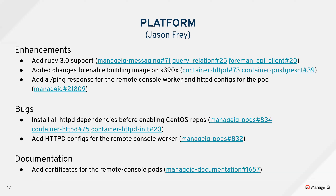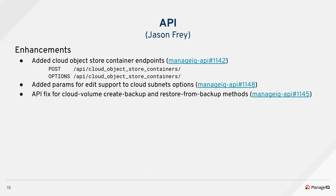Brandon also added documentation for how to add certificates for remote console pods. On the API side, Gilbert added the cloud object store container endpoints — you can do a POST to create or an OPTIONS call to get the DDF forms. He also added params-for-edit support to the cloud subnets options, so an OPTIONS call to cloud subnets returns the DDF form for editing. Jeffrey fixed an issue with the cloud volume create backup and restore backup methods.